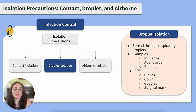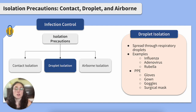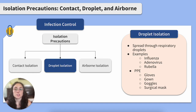Droplet isolation is used for clients with an infectious disease spread through respiratory droplets — droplets produced and spread when an infected person coughs or sneezes. Droplets may travel a few feet before settling on a surface. Examples of diseases requiring droplet isolation include influenza, adenovirus, and rubella. We'll wear gloves, gown, goggles, and a surgical mask any time we enter a droplet isolation room.